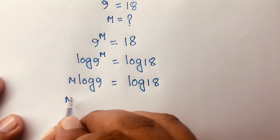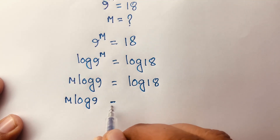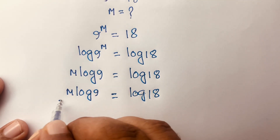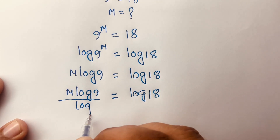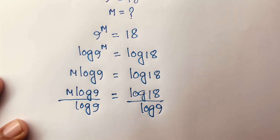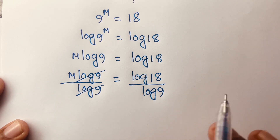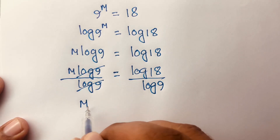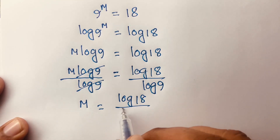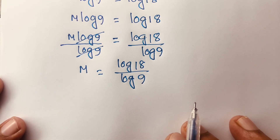Then I divide both sides by log 9. The log 9 on the left cancels, and we find that m is equal to log 18 over log 9.